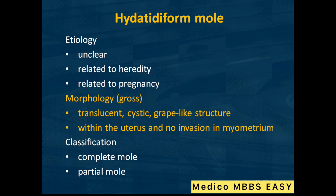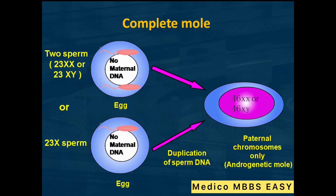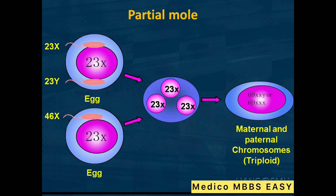Hydatidiform mole morphology — gross: translucent, cystic, grape-like structure within the uterus with no invasion into myometrium. Classification: complete mole and partial mole. In complete mole, two sperms (23 double X or XY chromosomes) fertilize an egg with 23 X chromosomes and no maternal DNA — a duplicate of sperm DNA, paternal chromosomes only (androgenetic mole). In partial mole, 23 X from one sperm and 23 X from another combine with the maternal chromosome set, forming a triploid.